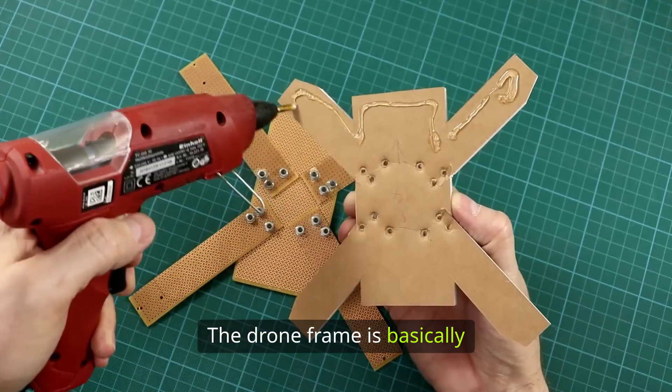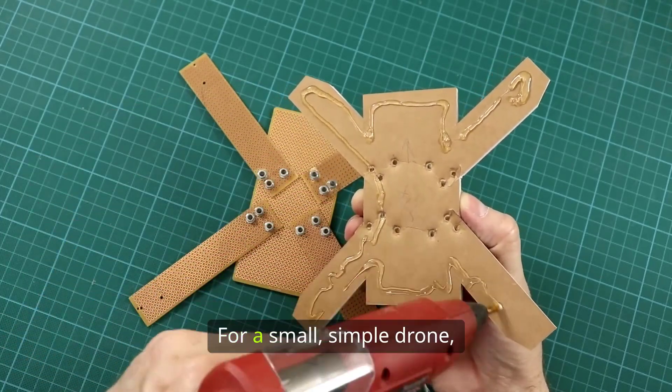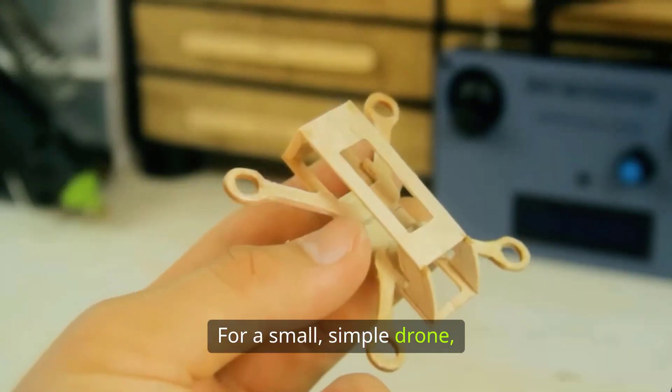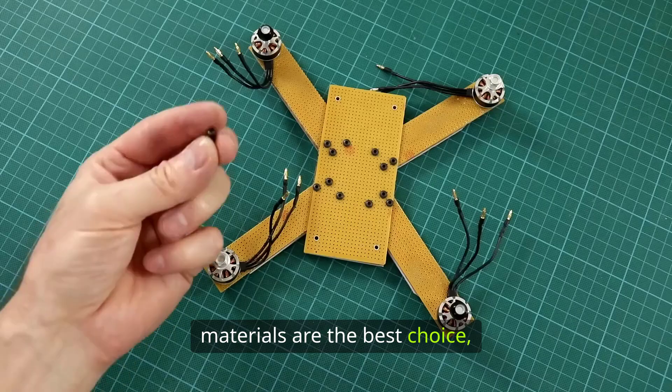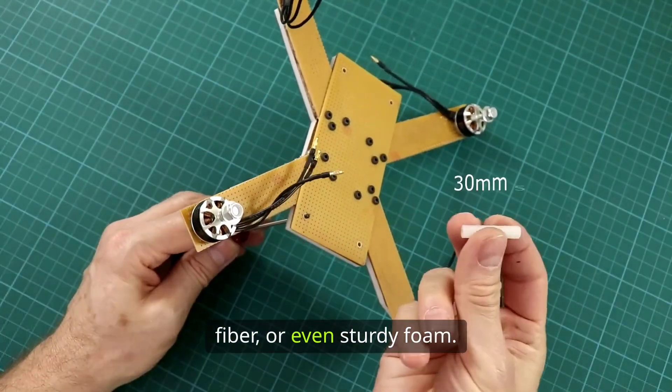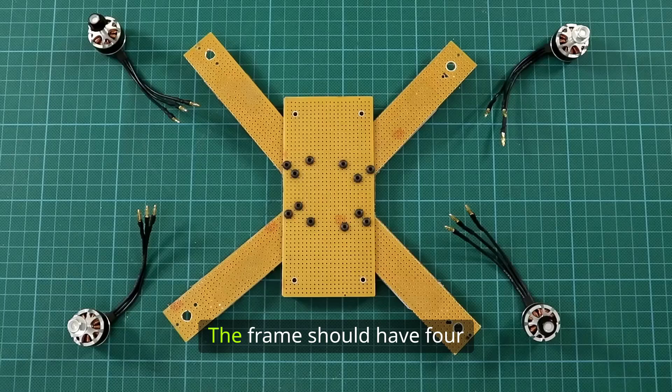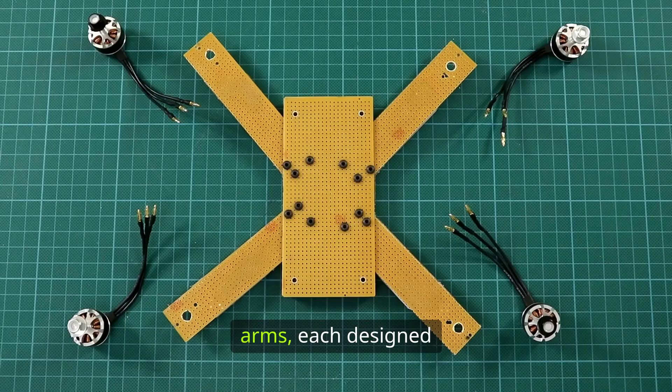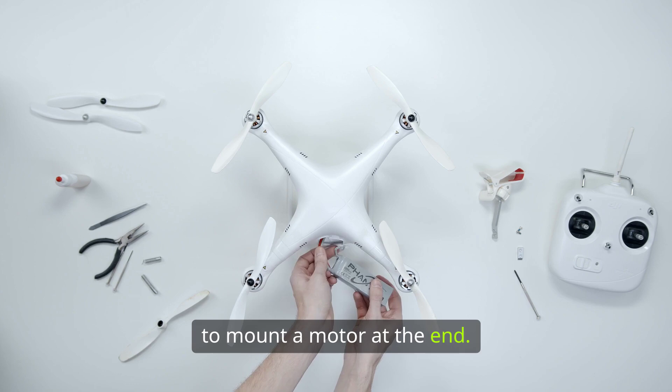The drone frame is basically its skeleton. For a small, simple drone, lightweight but sturdy materials are the best choice, such as plastic, carbon fiber, or even sturdy foam. The frame should have four arms, each designed to mount a motor at the end.